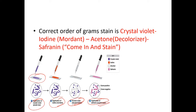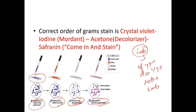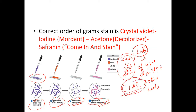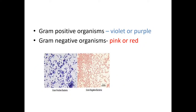To remember gram staining, use the mnemonic 'Come In And Stain' — C-I-A-S. Crystal violet, Iodine, Alcohol, Safranin. Gram positive organisms appear violet or purple in color, and gram negative organisms appear pink or red in color.